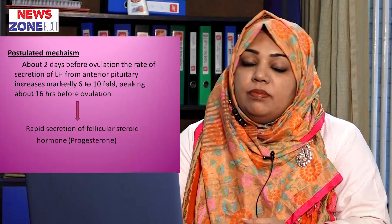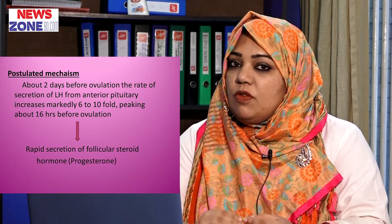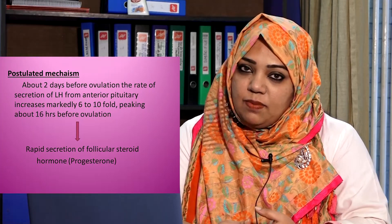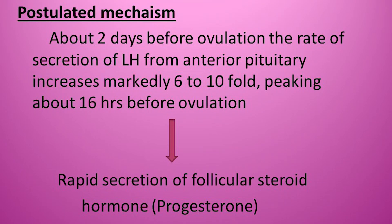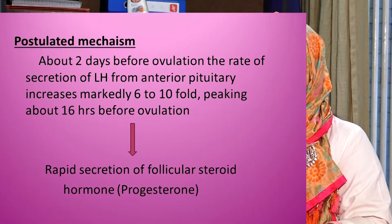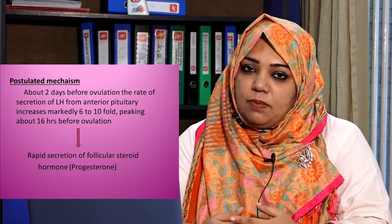Now let us see the postulated mechanism of ovulation, which explains how ovulation is actually taking place. About two days before ovulation, the secretion of luteinizing hormone from the anterior pituitary gland increases markedly about six to tenfold, and this peaks 16 hours before ovulation. This luteinizing hormone is very important for ovulation, and without this preovulatory LH surge, ovulation will not take place.